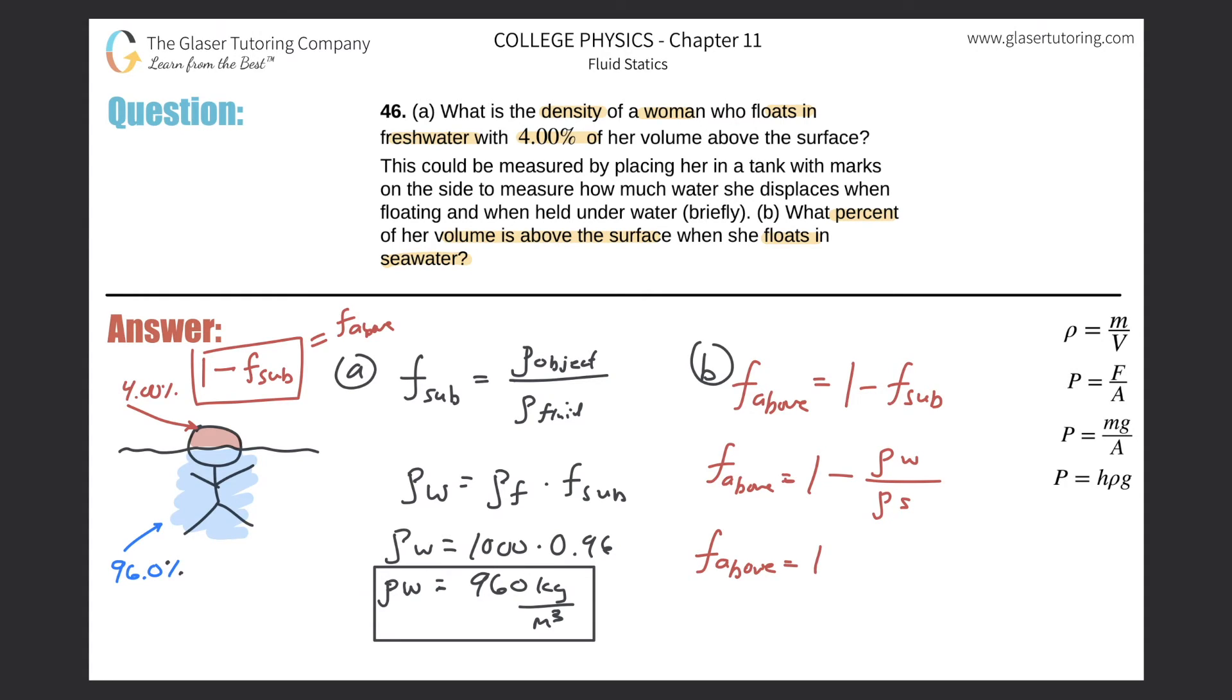So the density of the woman we found before was 960 kilogram per cubic meter, and the density now of seawater, you can look this up, it's 1025 kilogram per cubic meter. So now all we have to do is just do the calculation here.